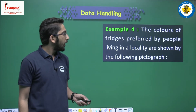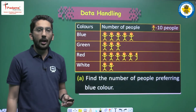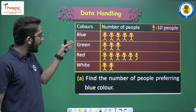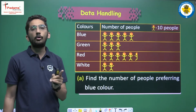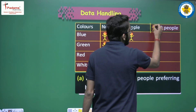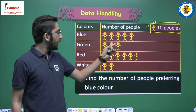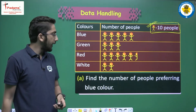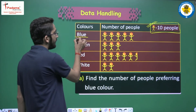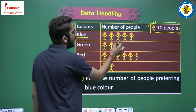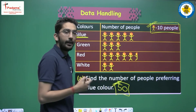The colors of fridges preferred by people in a locality are shown by the following pictograph. We have four colors: blue, green, red, and white. Note carefully that here one image does not represent one person — one image represents 10 people. So for green color, there are 3 images, meaning 10 plus 10 plus 10 equals 30 people prefer the green fridge. To find the number of people preferring blue color: there are 5 images, so 10 times 5 equals 50 people prefer blue.